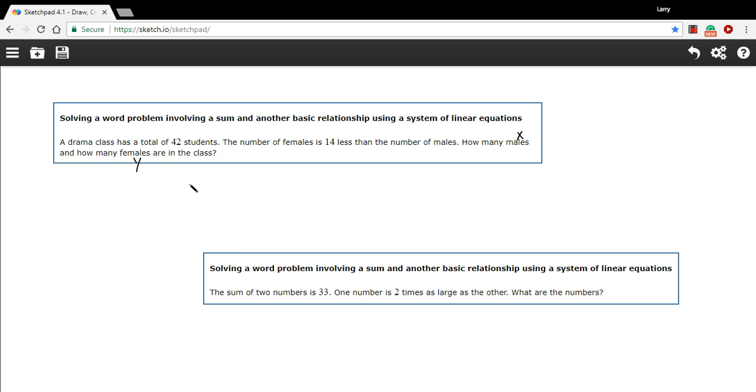If we have two variables, we need to come up with two equations that use x and y. So let's see if we can get that from these facts up here. The first fact is a drama class has a total of 42 students. Since x represents how many males, y represents how many females, and there are only males and females in the class, we could say x plus y equals 42. So that's an equation we can write with those two variables.